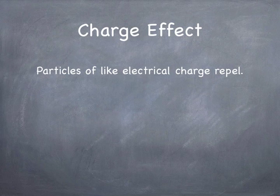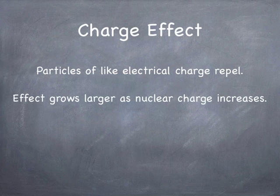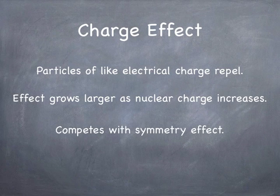There's also the charge effect. Protons have positive charge, neutrons don't. Because all protons repel each other, as the nucleus gets larger and has more protons, their mutual electrostatic repulsion increasingly affects the total nuclear energy. As a result, you don't see equal numbers of neutrons and protons in large nuclei — the charge effect causes a shift favoring more neutrons.